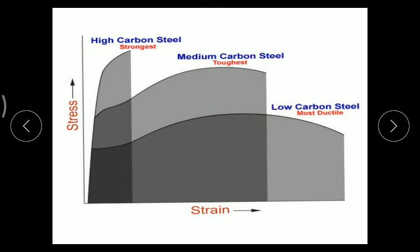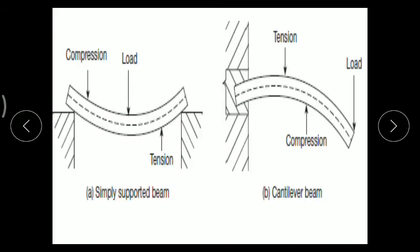The failure will not be sudden. Concrete, on the other hand, is not going to provide any kind of warning before failure. If the beam is simply resting on the support, that is known as a simply supported beam. If one end of the beam is fixed, that is known as a cantilever beam.